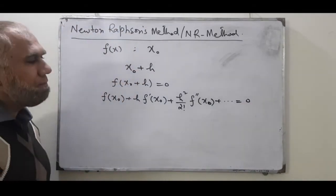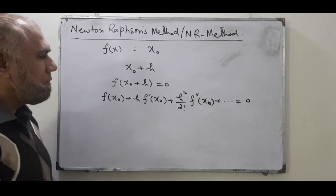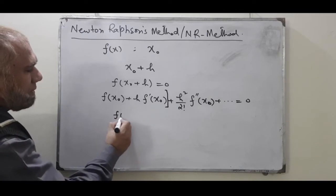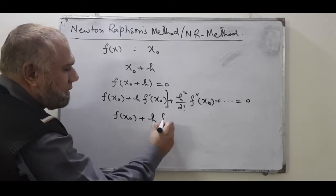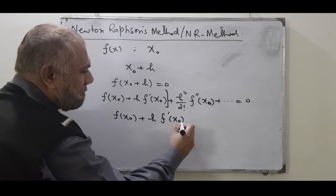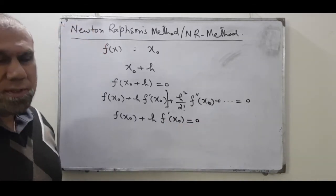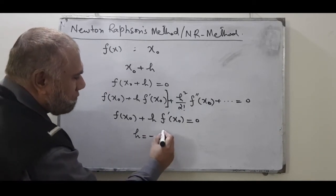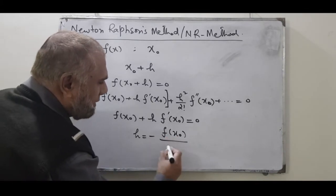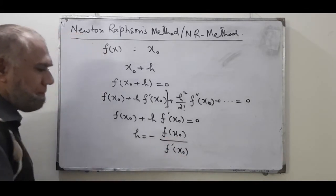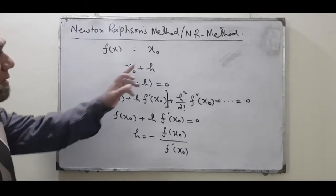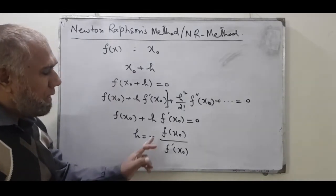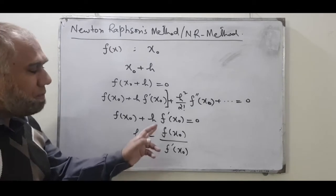Now if we truncate it up to the first order, we get f(x₀) + h·f′(x₀) = 0. From here we can isolate h, so h equals minus f(x₀) divided by f′(x₀). So now you can see the increment added to x₀ can be obtained by using this ratio — the relationship between the function's value at the initial point and its derivative at the initial point.